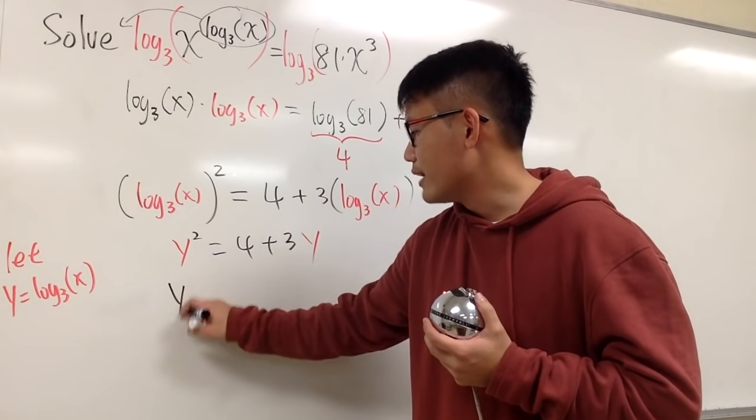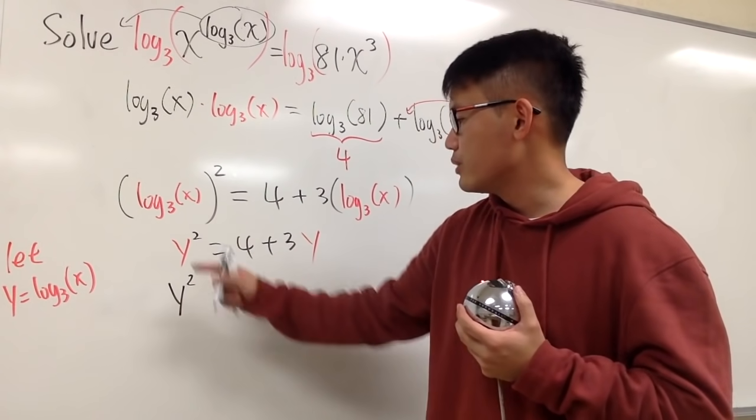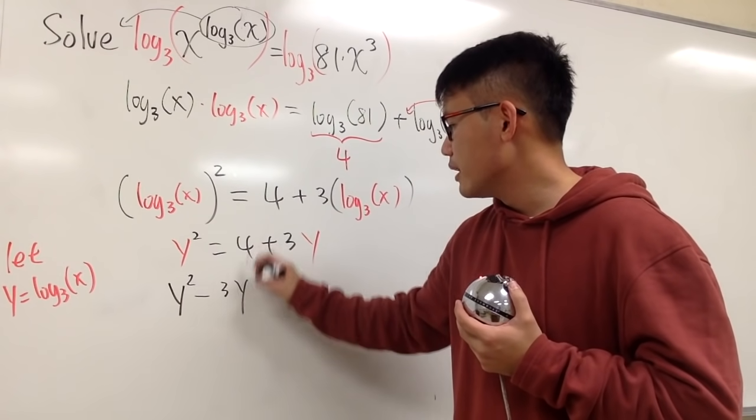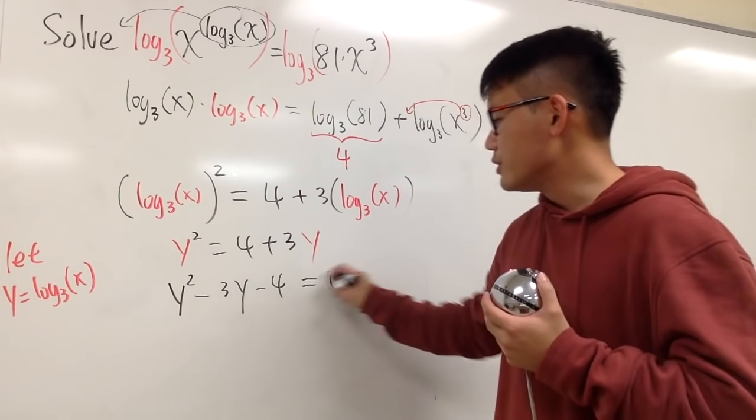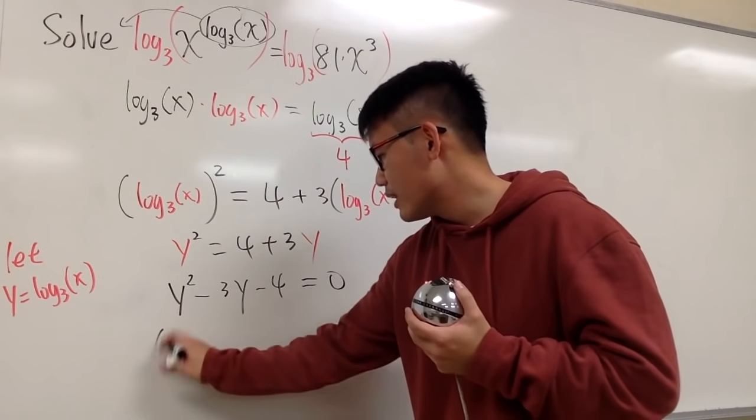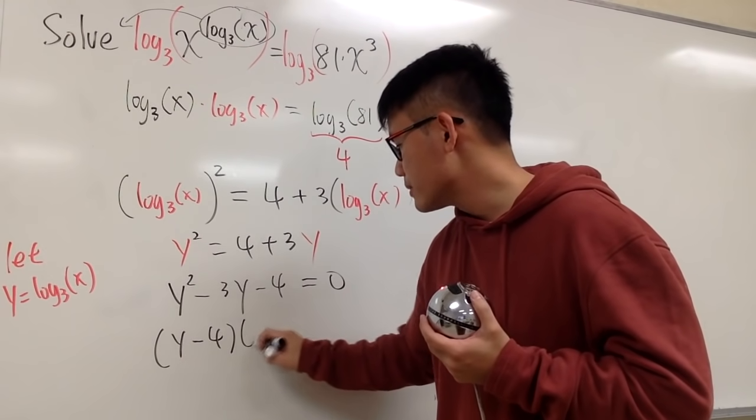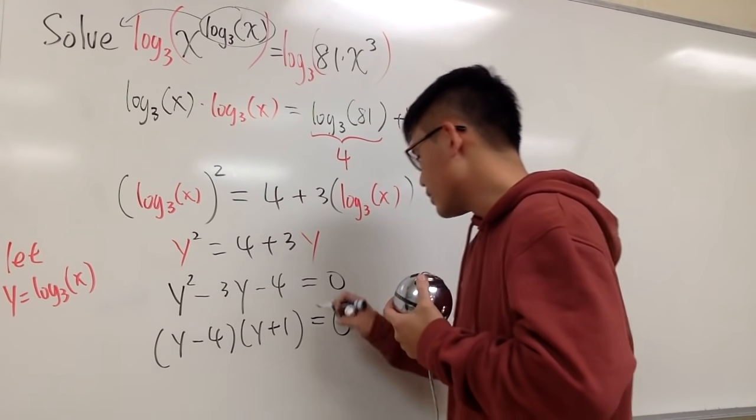Solve it. Y squared, bring this and that to the left hand side, so we have minus 3y minus 4, this is equal to 0. Factor it. This is y minus 4 times y plus 1 equals to 0.